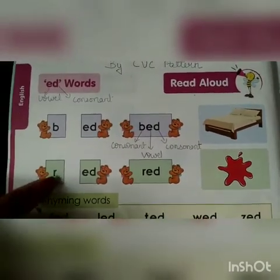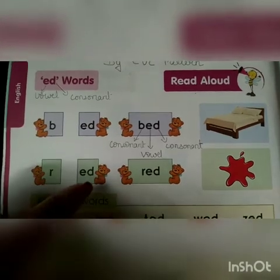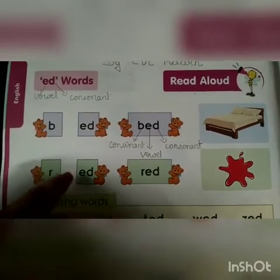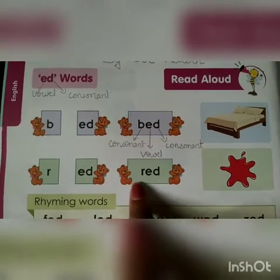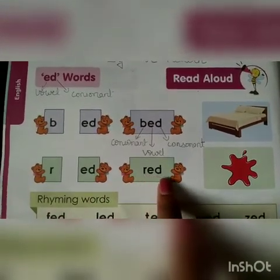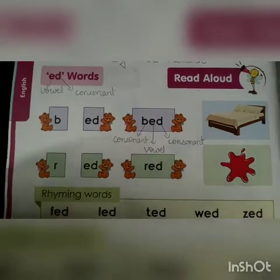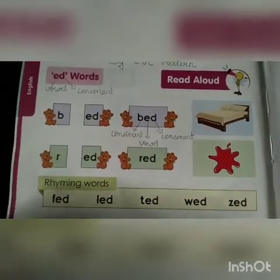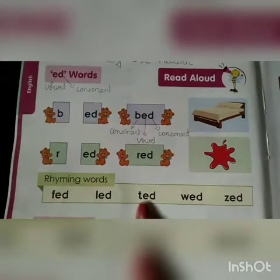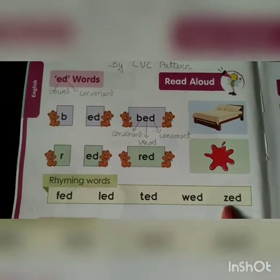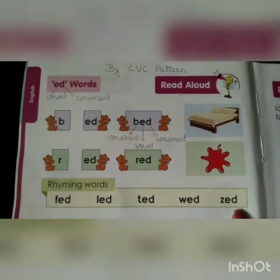Similarly, R plus ED — R is a consonant — so R plus ED is equal to RED. Let's study the rhyming words: FED, LED, TED, WED, and ZED.